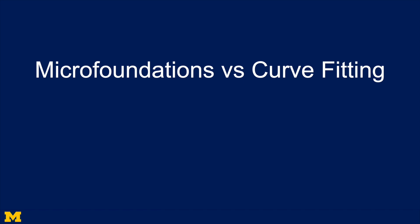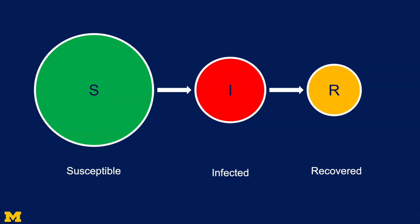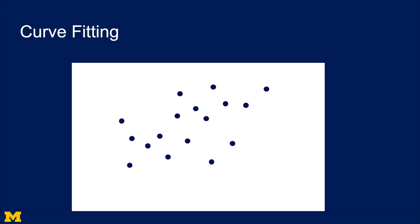The IHME model is a curve fitting model that differs from the SIR model, which had micro foundations. In the SIR model, we placed people in three categories — susceptible, infected, and recovered — and then we made micro level assumptions about how people moved between those categories and got a pattern from that. In a curve fitting model, we take existing data and try to fit that data to a curve or a line, like linear regression, finding the line that best expresses the pattern.